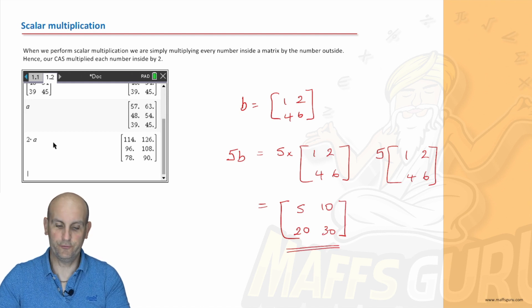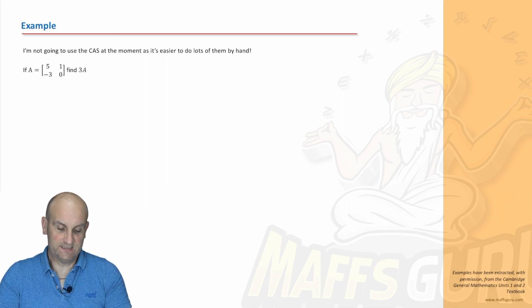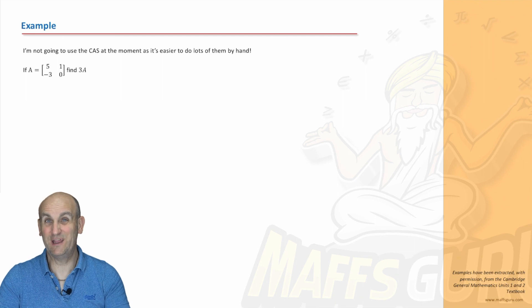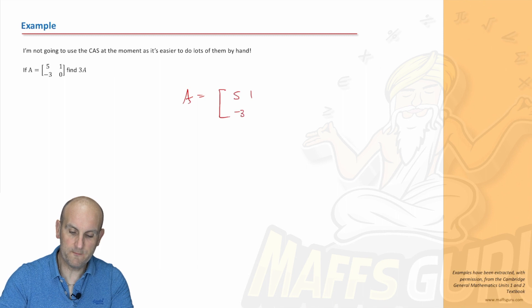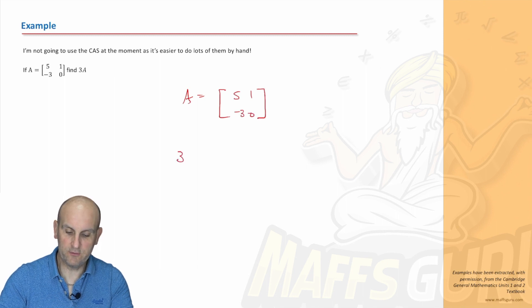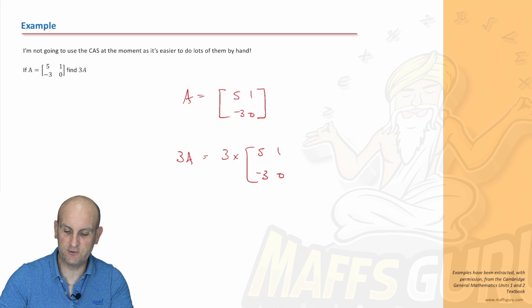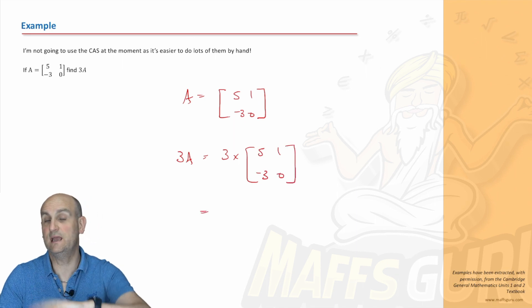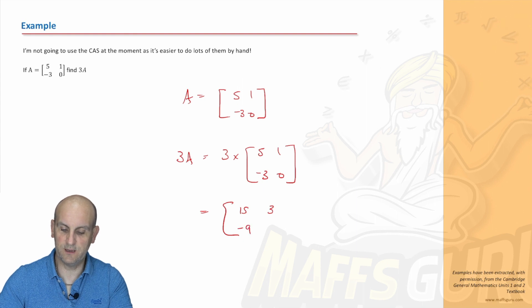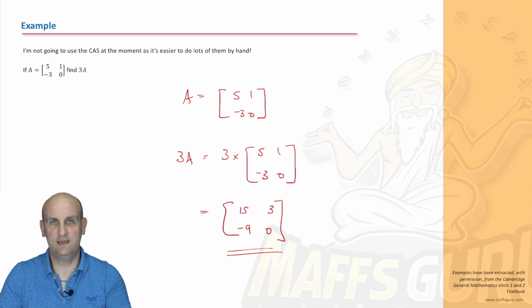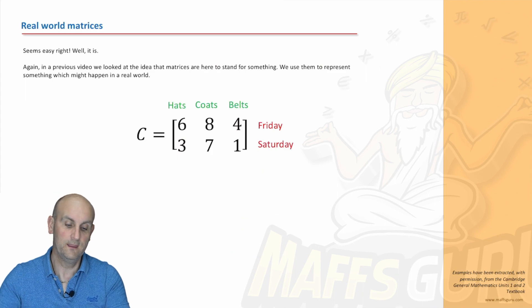And lo and behold that then would be the answer to 5B. Difficult? No, not at all. This is why I love matrices. Alright so I'm not going to use the CAS at the moment because many of these you can actually do by hand. So if A is equal to 5, 1, minus 3 and 0, what have we got to find? 3A is going to be 3 times that matrix. And so what do we do when it's a scalar multiple? We multiply absolutely everything by that. So 5 times 3 is 15, 3 times 1 is 3, 3 times minus 3 is minus 9, and 3 times 0 is 0. Anything times by 0 is in fact 0.